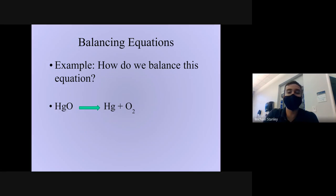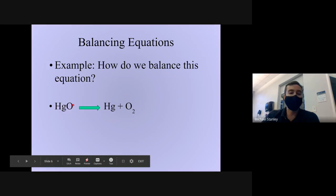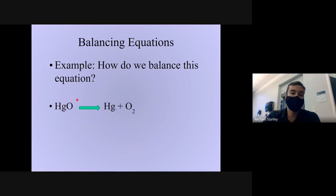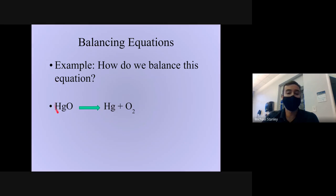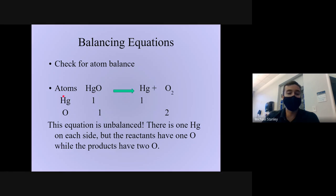Here we have a basic chemical equation: HgO — Hg is the symbol for mercury, O is for oxygen, so mercury oxide — HgO produces Hg plus O2. This bigger compound is being broken down into two smaller atoms. The first thing we do is figure out which atoms we're dealing with. In this equation it's simple: we have Hg atoms and O atoms. I like to start by writing out the atoms underneath the equation — so Hg and O.